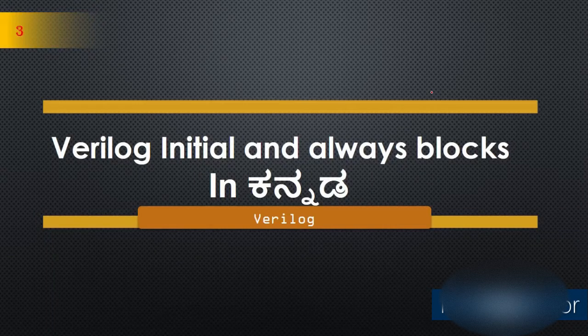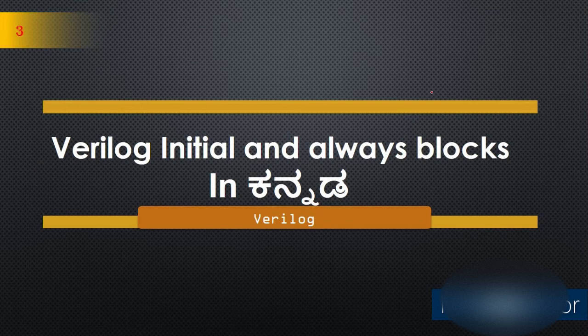Hello everyone. In this video, we will look at what are Verilog Initial and Always blocks. Verilog coding will be used in initial and always blocks. In initial, it will be used to initialize. In always, it will be used to continuously execute statements.